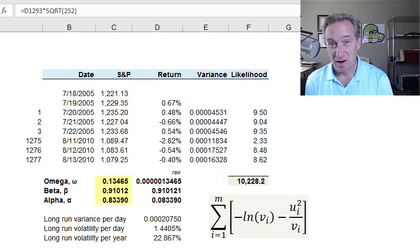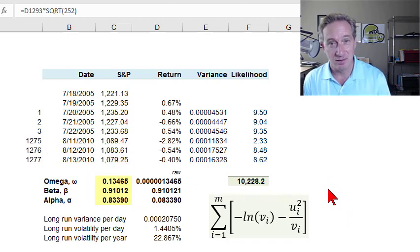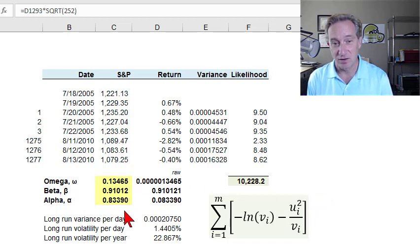The GARCH-11 model is probably the most popular model for estimating volatility and variance. The problem is it has three parameters, and so there's an infinite number of choices as to how to parameterize that model. A popular approach to determining the parameters is the maximum likelihood estimation approach, and it determines for us the parameters that best explain the data that we observe.